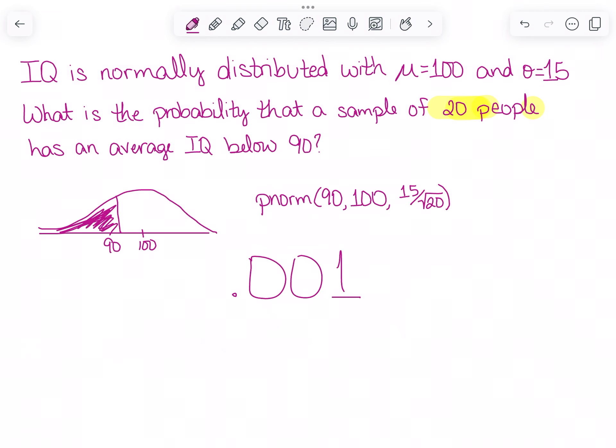Next, what is the probability that a sample of 20 people has an average IQ below 90? This time I'll need to change my standard deviation since I do in fact have a sample size. I have an n here.